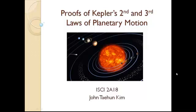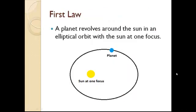Hi, my name is John, and in this video I will be explaining the proofs of Kepler's second and third laws of planetary motion. To briefly go over the first law, it states that a planet revolves around the Sun in an elliptical orbit with the Sun at one focus, which can be illustrated by the diagram shown.